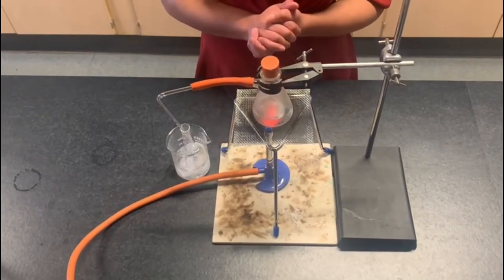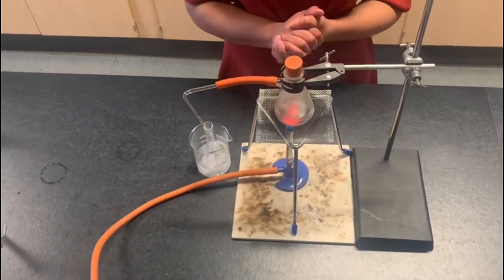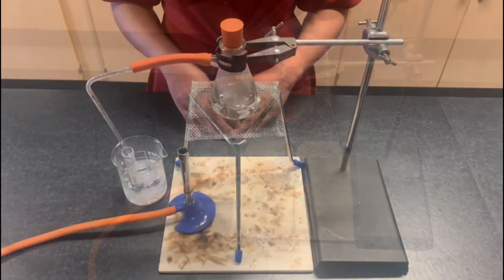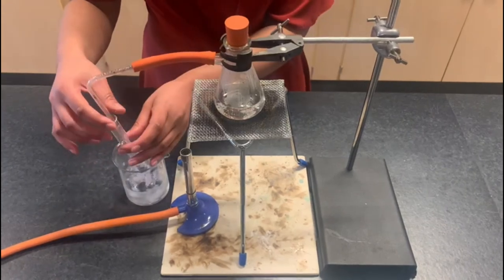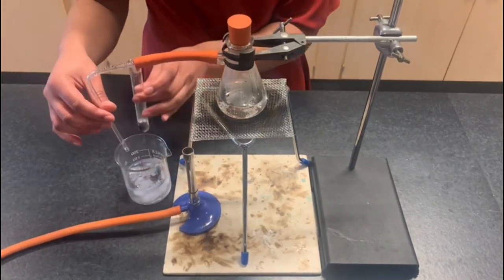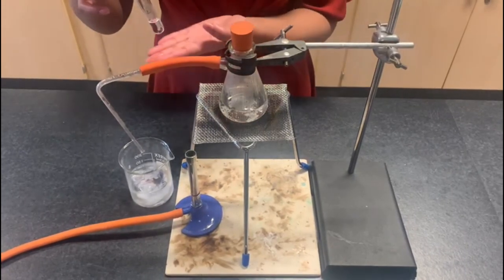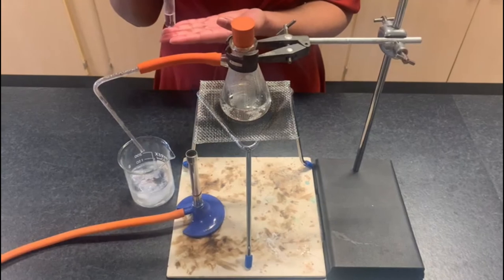While this is boiling, key thing you need to make sure is that the seawater is boiling gently. You then stop the Bunsen burner once you've collected about two centimeters cubed of sample.